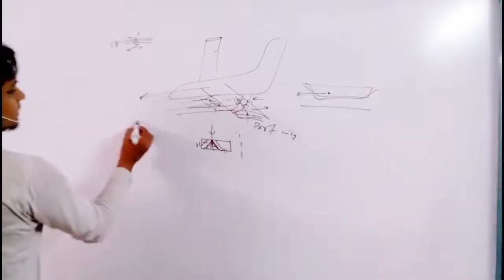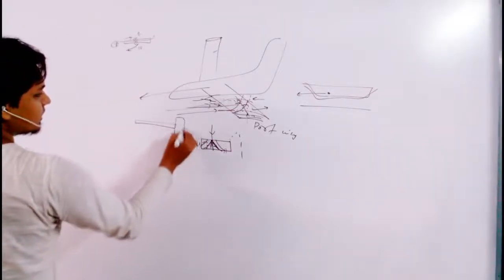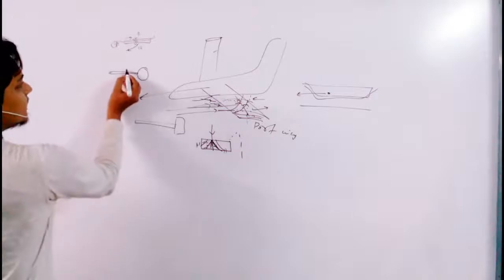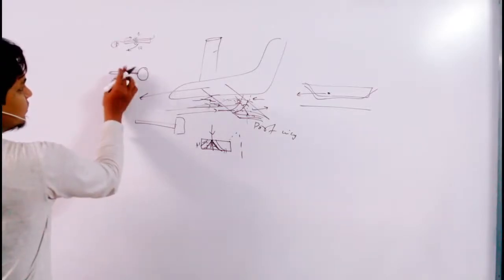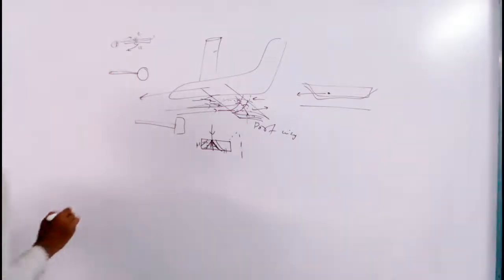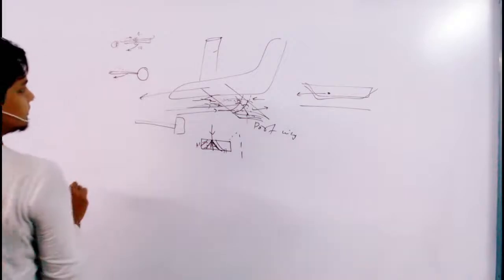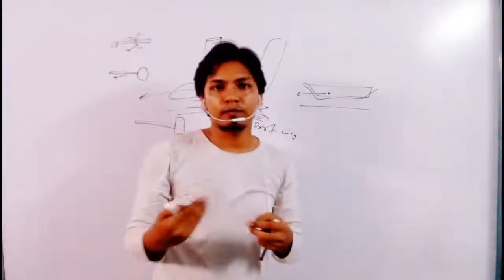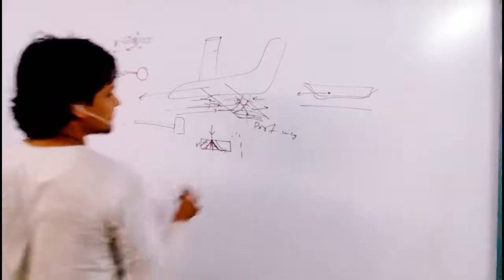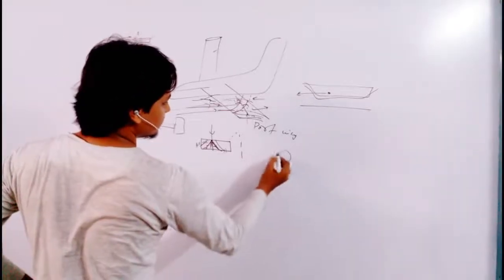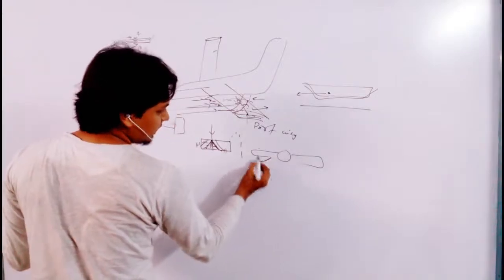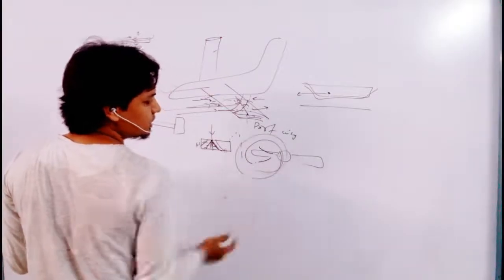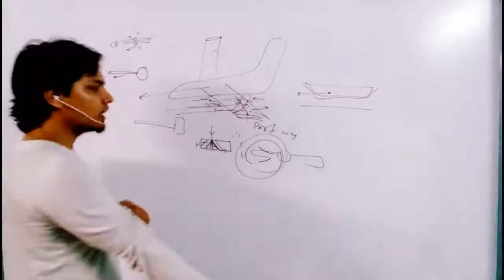In the back-side view with the fuselage visible, the upper flow curls toward the root and the lower flow curls toward the tip. When both flows leave the wing, they form a curl — a vortex. This is called wingtip vortices or trailing edge vortices.